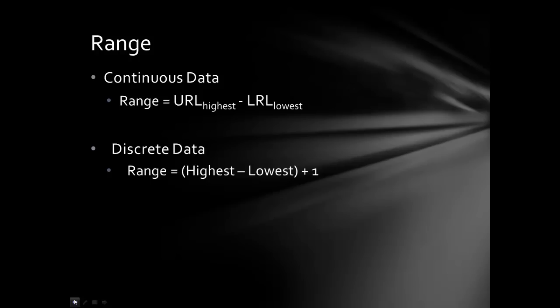The book states you can also just use highest minus lowest, but for our purposes we'll use the two formulas shown. I prefer highest minus lowest plus one for discrete data because it tells you the number of different categories or different responses, not just what's in between. The range is easy to measure but not very informative — it's heavily influenced by outliers and only takes into account the highest and lowest score.